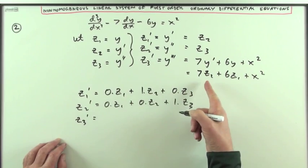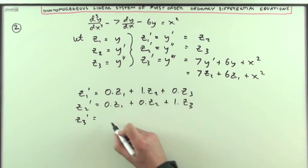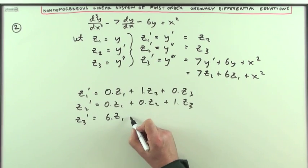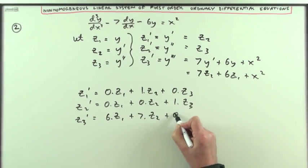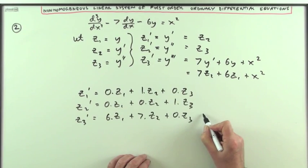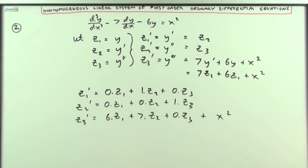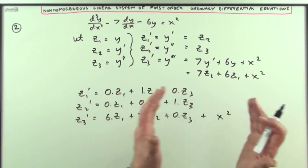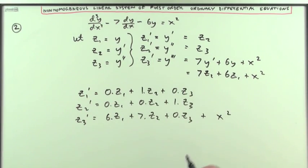z3 dashed is going to be 6 lots of z1, 7 lots of z2, no lots of z3, but this extra x squared at the side. Now that isn't going to interfere with this matrix, it simply means I'm going to have two separate parts.